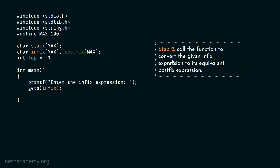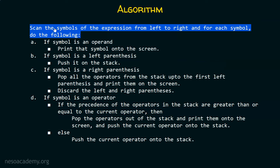Step 2 is to call a function to convert the given infix expression entered by the user to its equivalent postfix expression. For this purpose, I am calling the function INTO_POST. This function is capable enough to convert an infix expression to its equivalent postfix form. Of course, we have to define this function somewhere — and this function is dependent on our algorithm. We have to convert that algorithm to its equivalent C program, and that whole piece of code is nothing but the INTO_POST function.